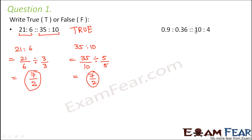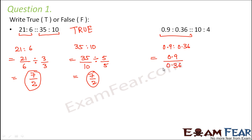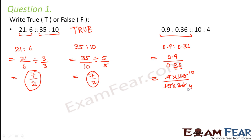0.9 is to 0.36 — is it proportional to 10 is to 4? Let's calculate 0.9 divided by 0.36. We can write 0.9 as 9 divided by 10, since there is one digit after the decimal point. Similarly, 0.36 can be written as 36 divided by 100, since there are two digits after the decimal point. This gives us 10 into 10 equals 100 in the denominator, and 9 into 4 equals 36 in the numerator.